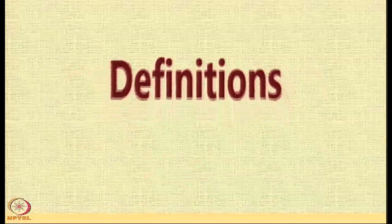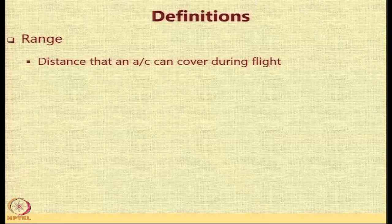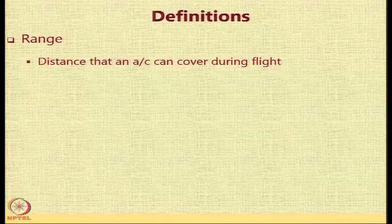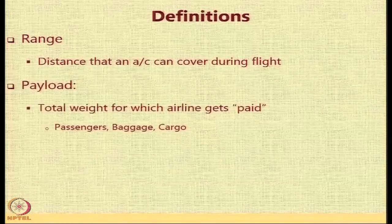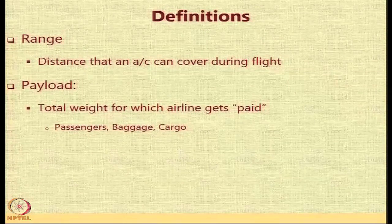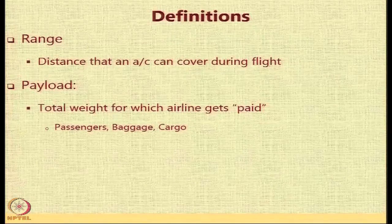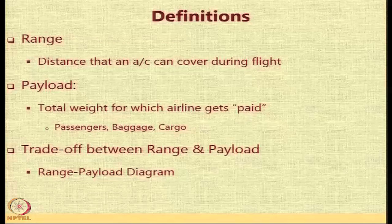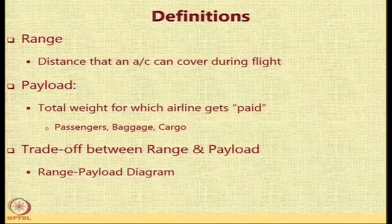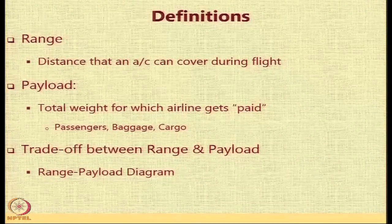Before we start, it is important to look at some definitions. Range is defined as the distance that an aircraft can cover during its flight, and there are different types of ranges as per the definition which we will see shortly. Payload is the total weight for which the airline gets paid, consisting of the passengers, their baggage, and the cargo. The trade-off between range and payload is basically the range payload diagram — sometimes also called the payload range diagram because payload is on the y-axis and range is on the x-axis.